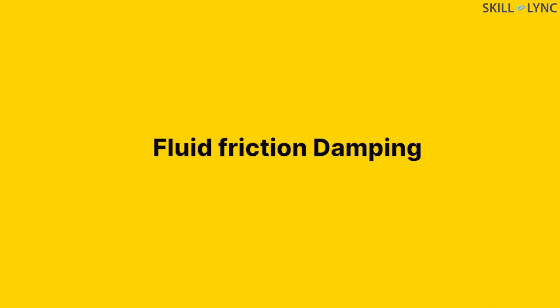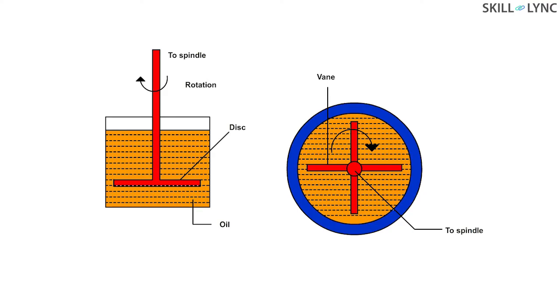Now, finally, we have the fluid friction damping. There are two images here. The image on the left has a spindle which is connected to a disc. The image on the right has the spindle connected to the vanes. They are placed in oil which should completely submerge the vanes or the disc. As the pointer moves, a friction drag is produced. This restricts the movement of the pointer.